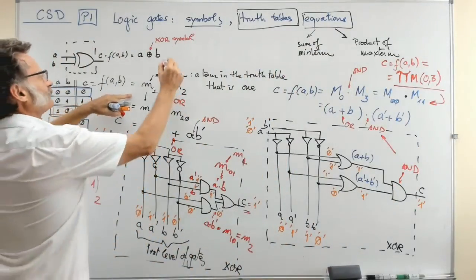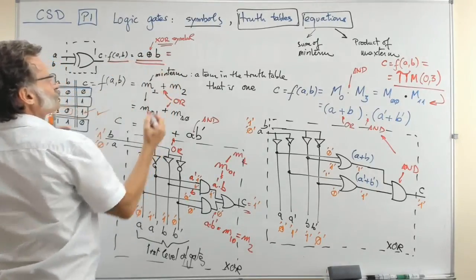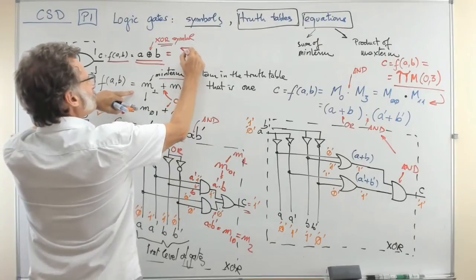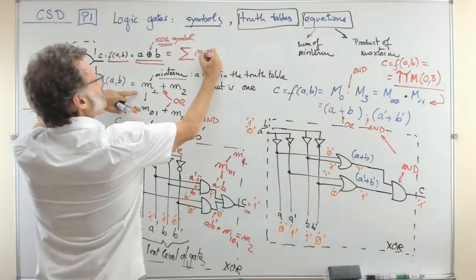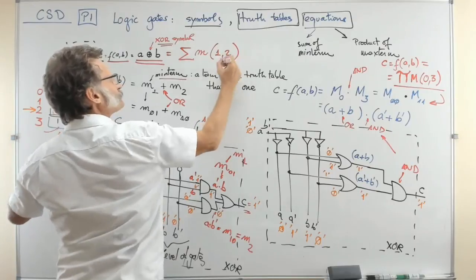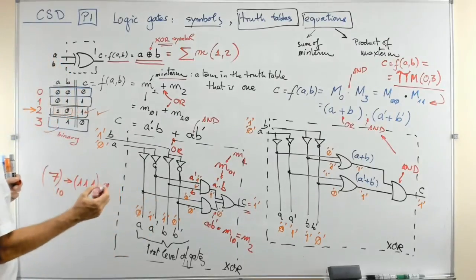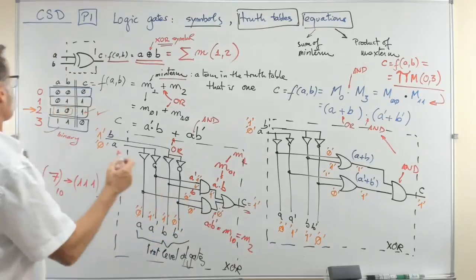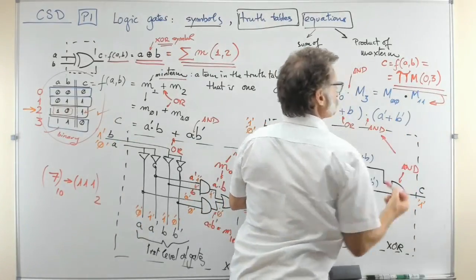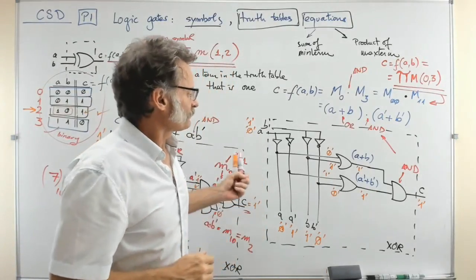The sum of minterms is represented using a lowercase m and the sigma symbol: C(A,B) = Σ m(1,2). This compact representation is exactly equivalent to the full circuit or the XOR symbol. So if you are expressing a truth table, you are at the same time expressing one of these equations — either the sum of minterms or the product of maxterms — and both are equivalent. That's the key idea here.